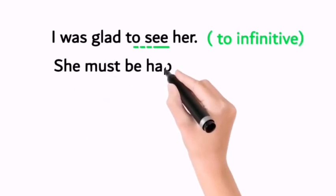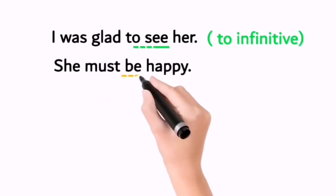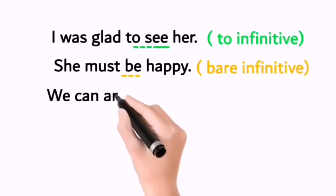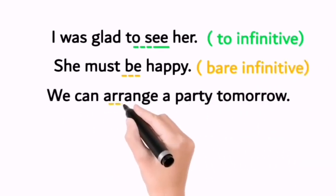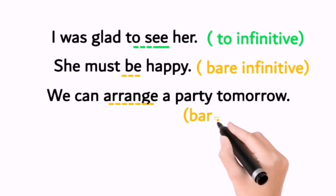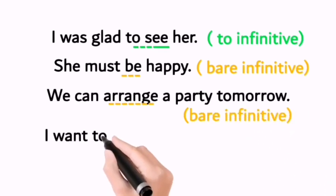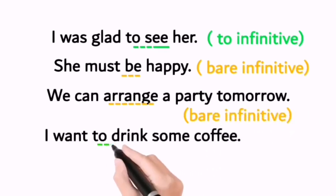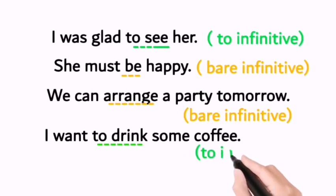She must be happy. 'Be' is a bare infinitive. We can arrange a party tomorrow. 'Arrange' is a bare infinitive. I want to drink some coffee. 'To drink' is a to infinitive.